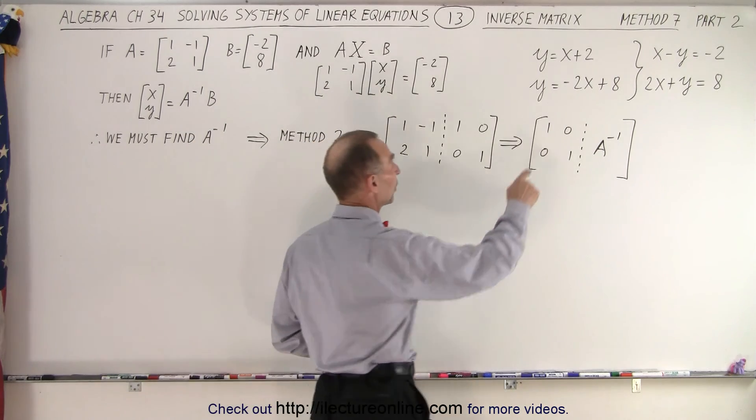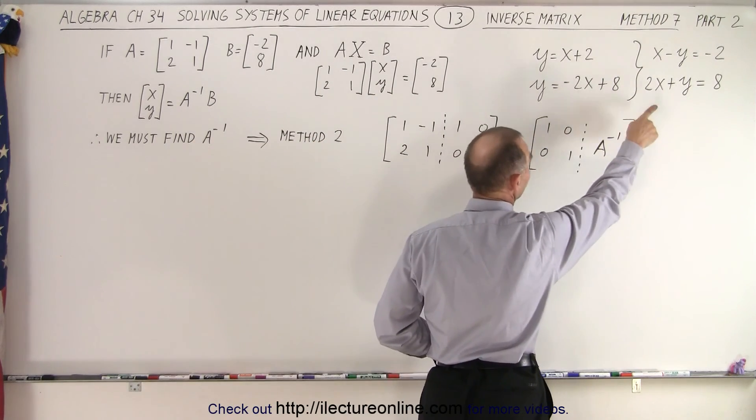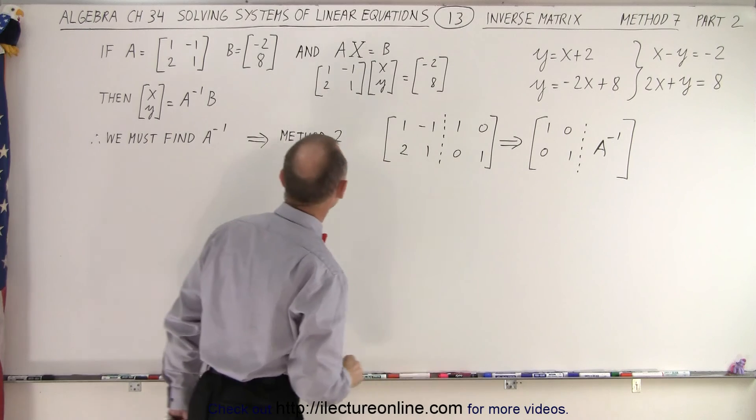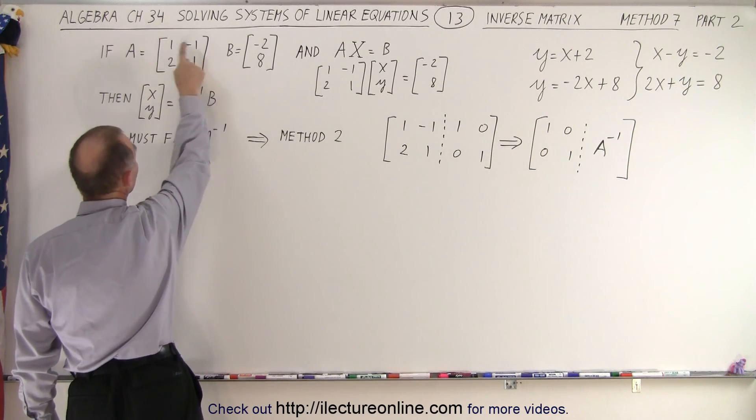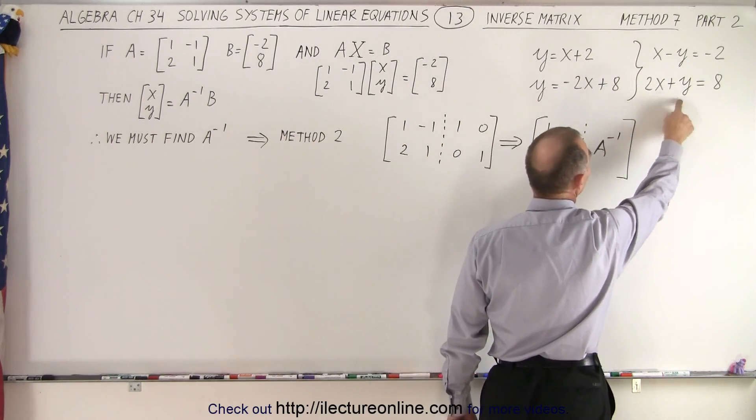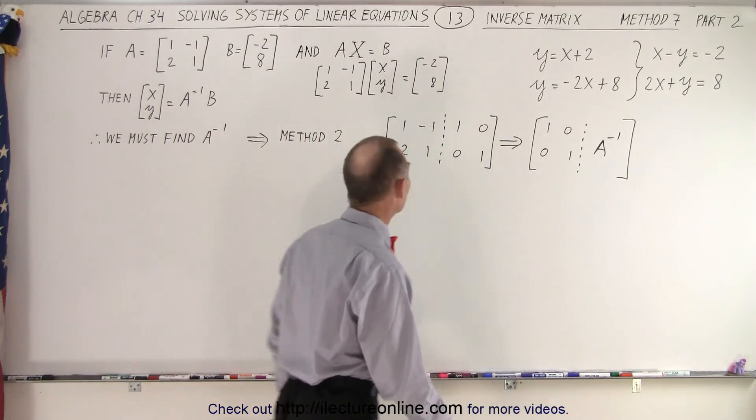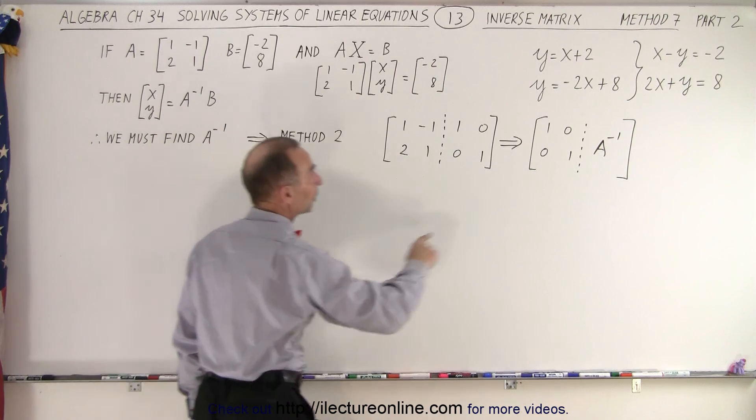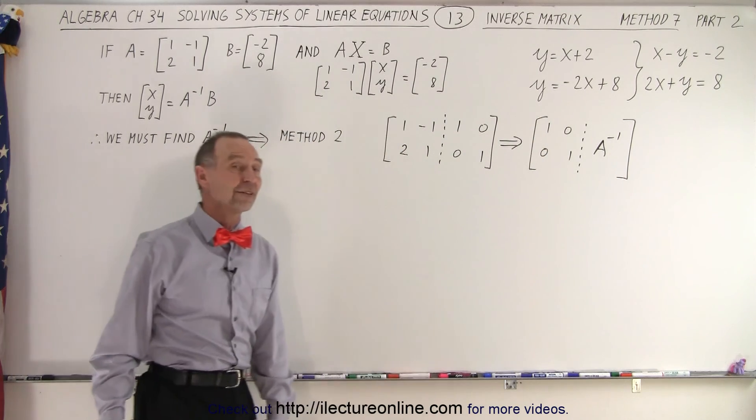Again, we start with the same two equations. We first have to convert them to that format. Then we create two matrices, A and B. A is simply the numerical coefficients of the x and y variables on the left side of the equation and the B matrix is simply the two constants on the right side of the equal sign.